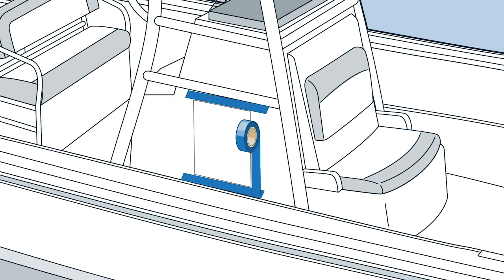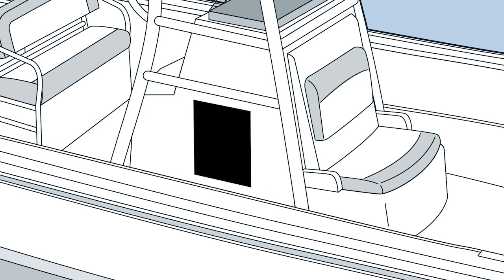Tape off the surface outside the index line to protect the fiberglass. Drill pilot holes inside the corners large enough for the jigsaw blade. Cut out the opening from corner to corner with the jigsaw and peel off the tape.